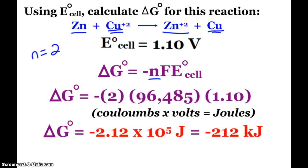My answer here comes out to be negative 2.12 times 10 to the fifth joules, or as we like to express our delta G, typically it's negative 212 kilojoules. It's a nice big negative value, and we would expect that this reaction is thermodynamically favored as written. We have a positive cell voltage, so that matches up as well.